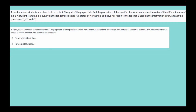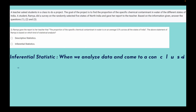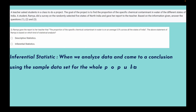Coming to question 2: Ramya gave the report to her teacher that the proportion of the specific chemical contaminant in water is on average 0.5% across all the states of India. The question asks which kind of statistical analysis this statement is based on. There are two types of statistics: descriptive and inferential. Inferential statistics involves analyzing sample data and drawing conclusions about the whole population.